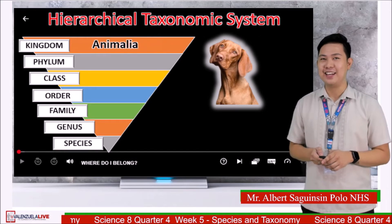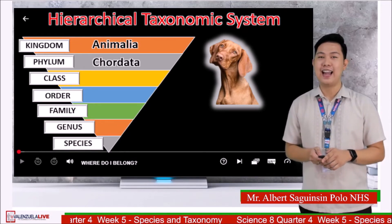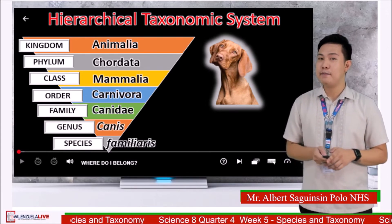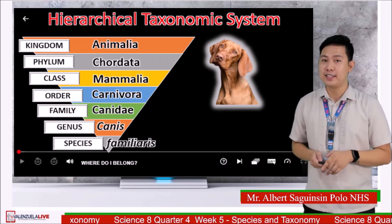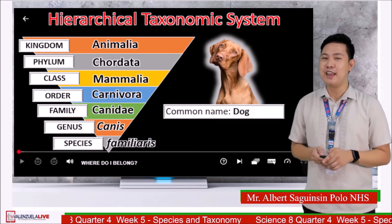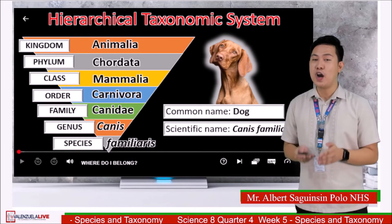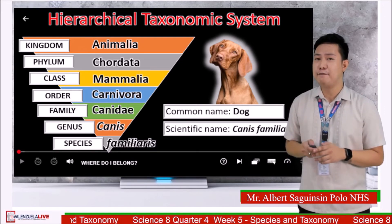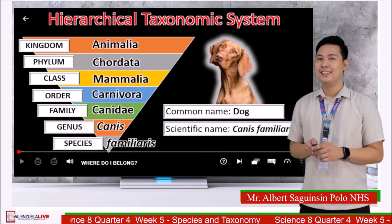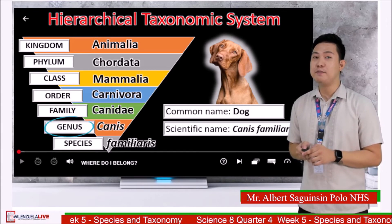You got it right — the answer is kingdom Animalia. What do you think is the common name for this organism? Comment your answers. Very good — the common name is dog, and the scientific name is Canis familiaris. By looking at the taxonomy levels, where do you think the dog's scientific name came from? Amazing — Canis familiaris came from the genus and species taxonomy levels.